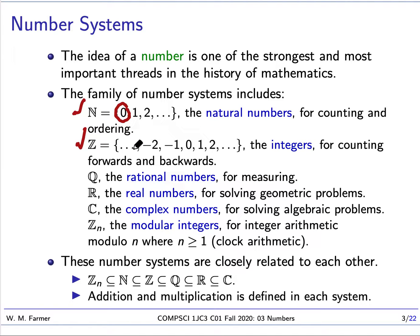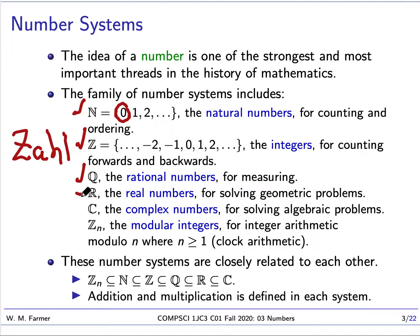We can also have the integers, which are for counting forwards and backwards. Then we have the rational numbers, which are for measuring. We represent the rational numbers with the letter Q, and the integers with the letter Z — from the German word 'Zahl', meaning number. Then we have the system of real numbers, used for solving geometric problems. A simple example: if two sides of a right triangle have length one, then the hypotenuse has length √2, which is not a rational number. To solve this geometric problem, we need real numbers.